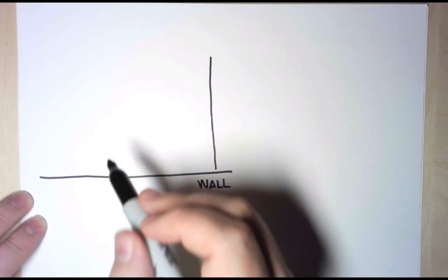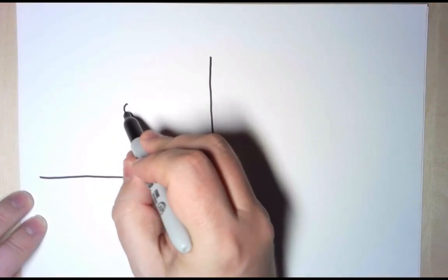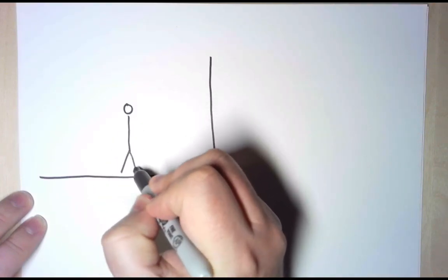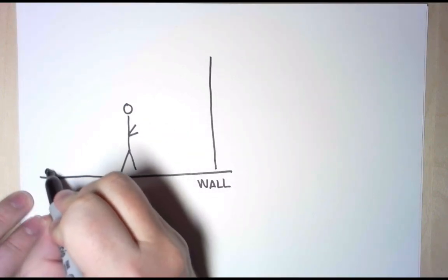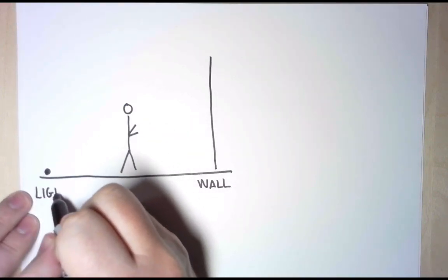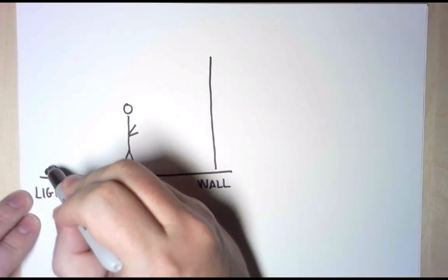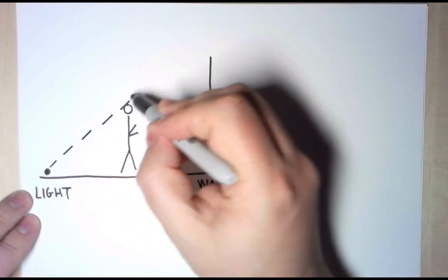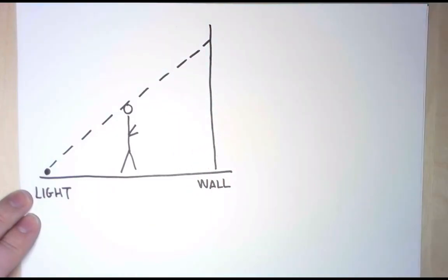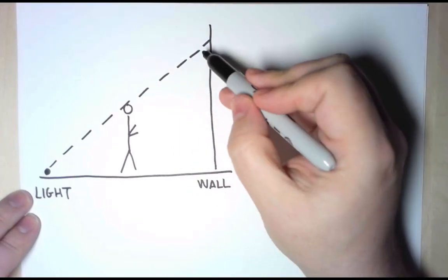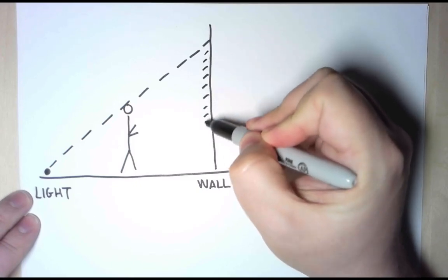The prisoner is running towards the wall, so let's put the prisoner maybe here, and the spotlight is here. Now the light is pointing towards the prisoner, and then it's producing a shadow on the wall. So all of this is going to be the shadow.